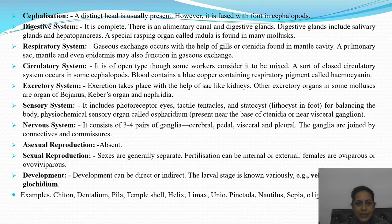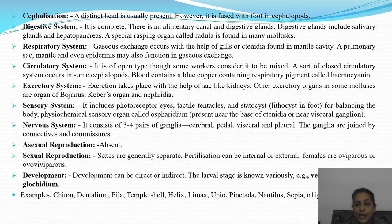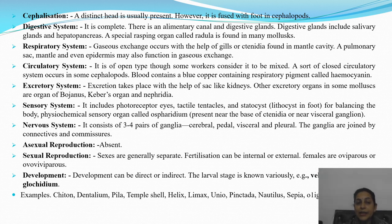Cephalization: a distinct head is usually present, however it is fused with the foot in cephalopods like octopus. Digestive system is complete — both mouth and anus are present, with alimentary canal and digestive glands including salivary glands and hepatopancreas. A special rasping organ called the radula is found in many molluscs. Respiration occurs through gills or ctenidia found in the mantle cavity, or through pulmonary sac; the mantle and epidermis also help in gaseous exchange.